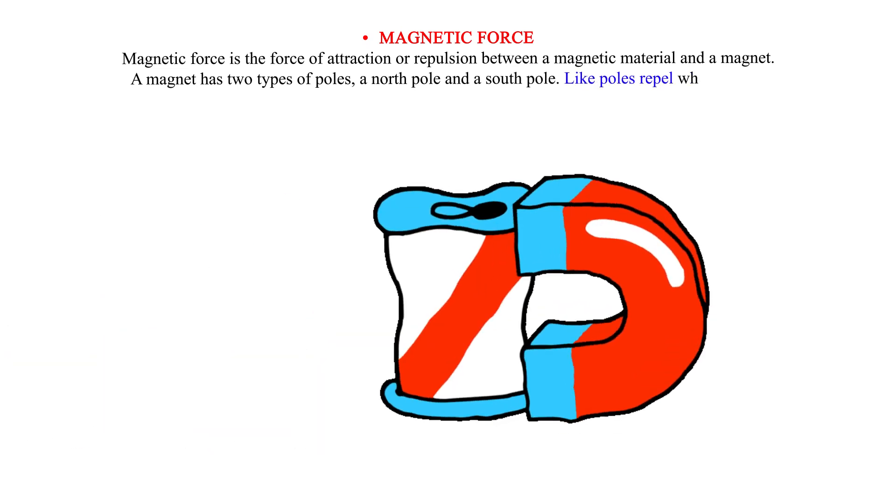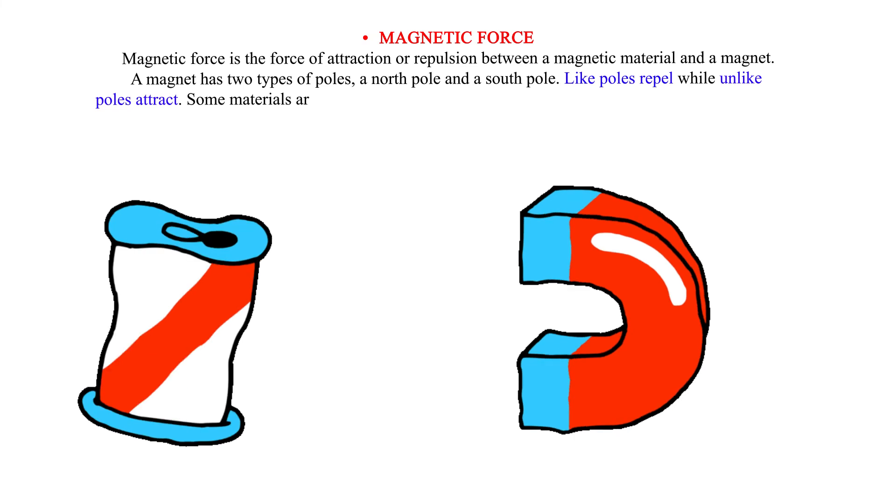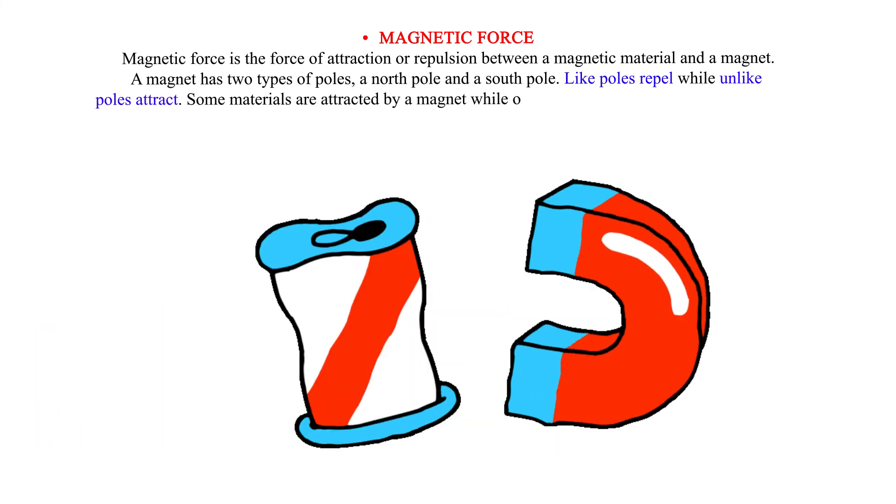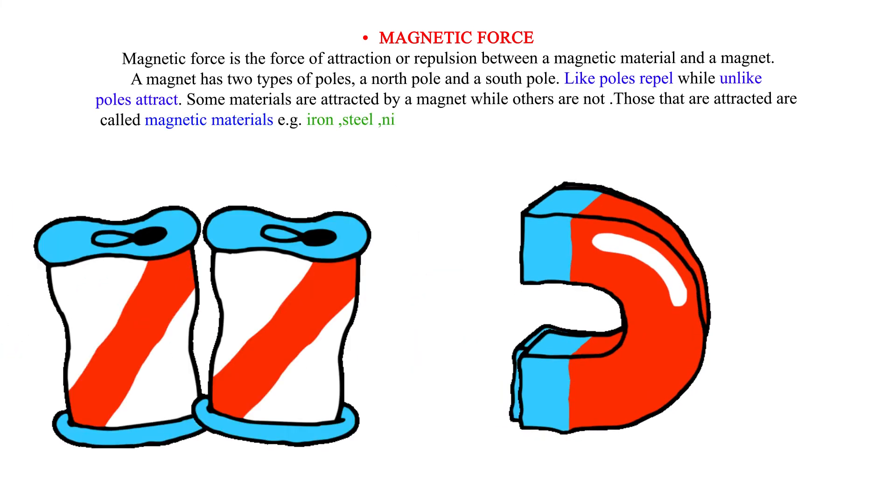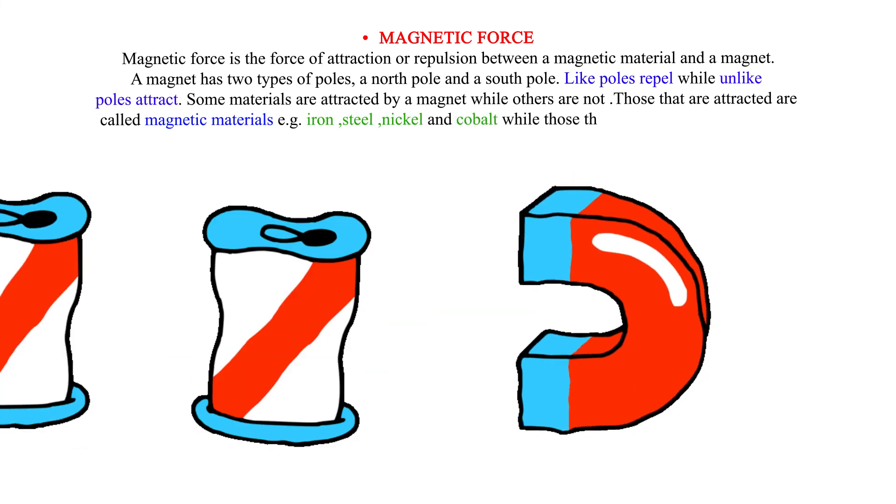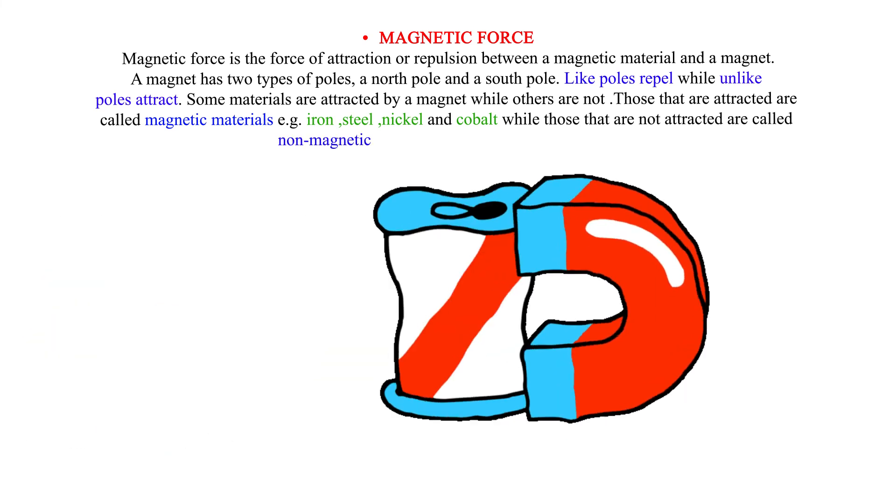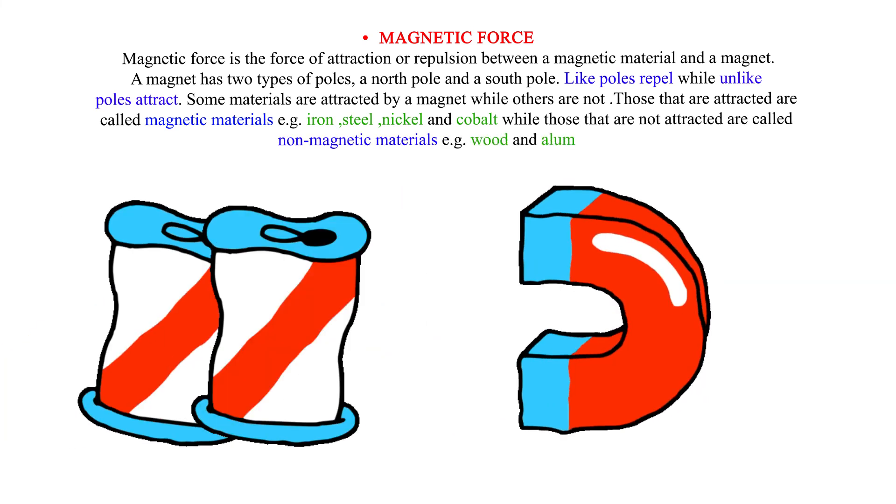Like poles repel while unlike poles attract. Some materials are attracted by a magnet while others are not. Those that are attracted are called magnetic materials, e.g., iron, steel, nickel, and cobalt, while those that are not attracted are called non-magnetic materials, e.g., wood and aluminum.